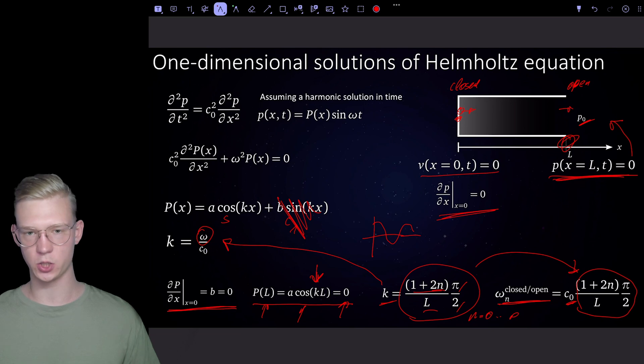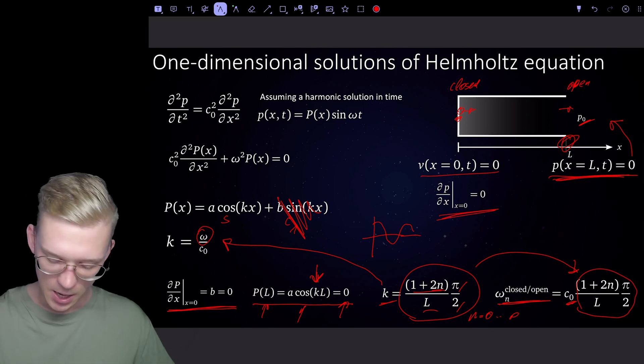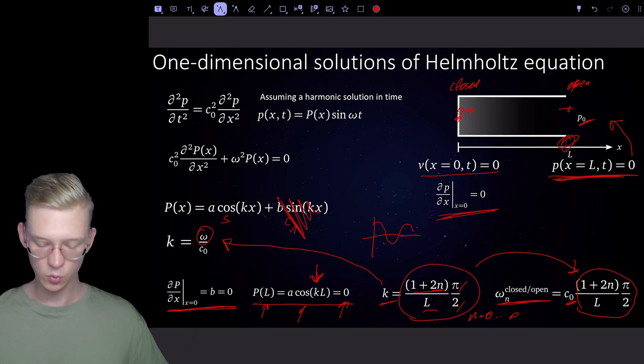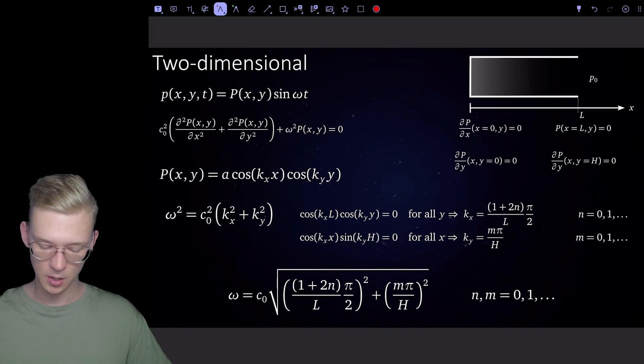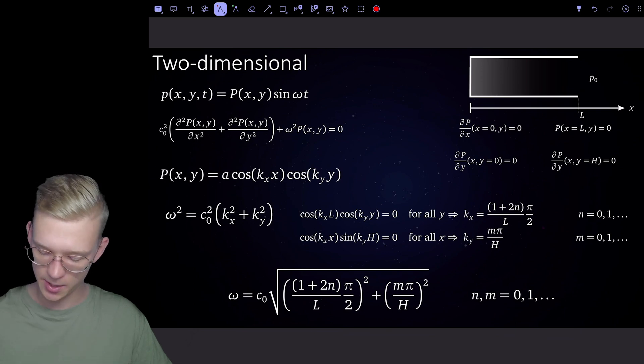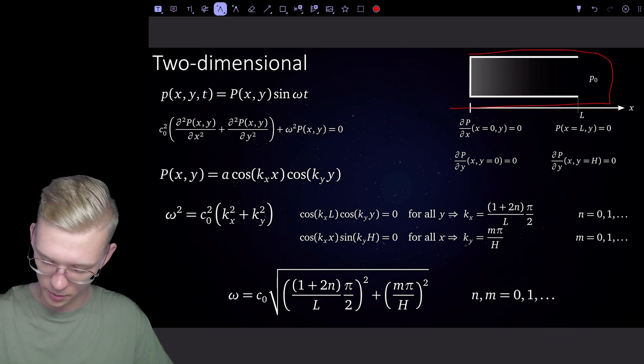This is just a one-dimensional solution of our system. We can do the same thing when we're having a 2D solution, a 2D problem. If we look at the two-dimensional case, we again have our closed-open tube.